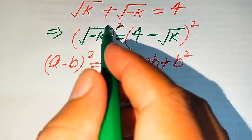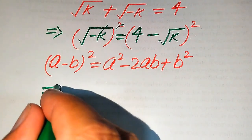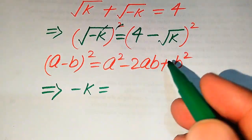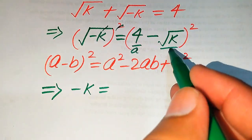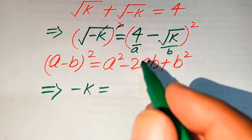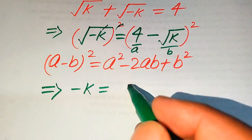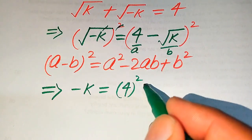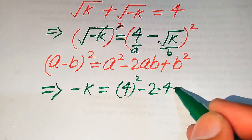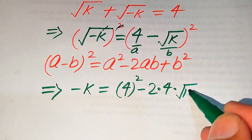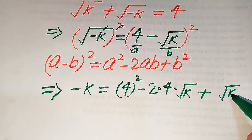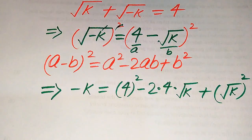On the left hand side the square and square root cancel, giving minus k. On the right hand side, our a is 4 and our b is square root of k. Applying the formula: a squared is 4 squared, minus 2 times a times b gives minus 2 times 4 times square root of k, plus b squared which is square root of k whole squared.